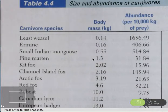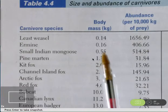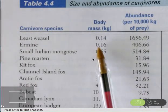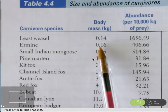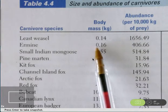Hi there. Here's my solution to question 4.17. We are supposed to build an appropriate model for predicting abundance from body mass for carnivores. So the explanatory variable is body mass in kilograms, and abundance is supposed to measure about how many carnivores there are in a particular area.